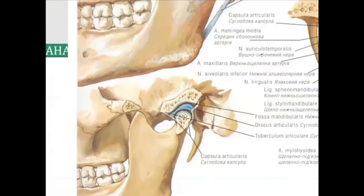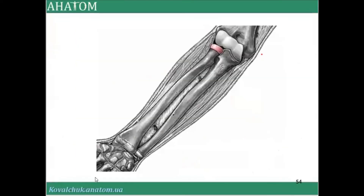An example of a combined joint is the temporomandibular joint. Another example is the joints between the two antebrachial regions — specifically the proximal and distal radio-ulnar joints.